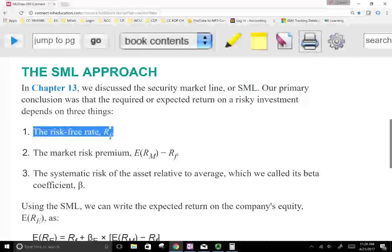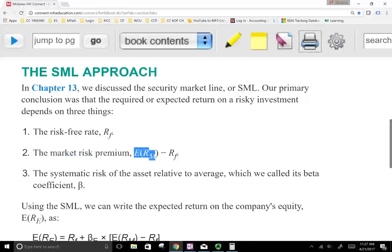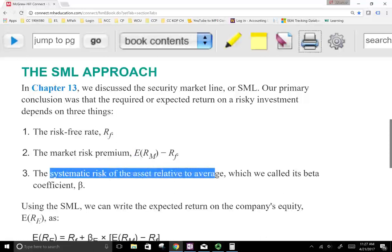What's the ongoing risk-free rate? What's the market premium? What's the market risk premium? For example, the market risk premium is the expected return above the risk-free rate. So what's the expected return over the risk-free rate? And the beta, which is the systematic risk of the asset relative to average, which is called beta. Those are the three things.